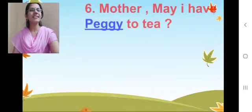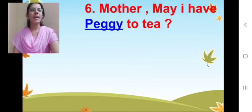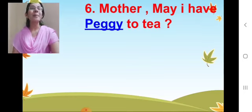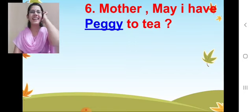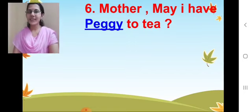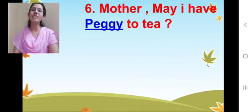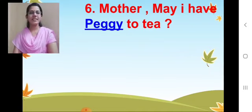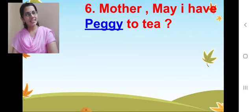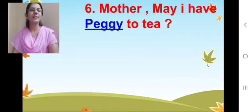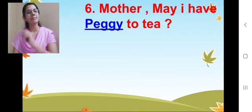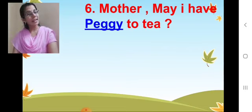Sixth one. 'Mother, may I have ___ too?' Peggy. So you know the spelling for Peggy now — P-E-G-G-Y. Done? So now read the sentence: 'Mother, may I have Peggy too?'